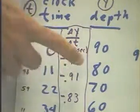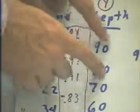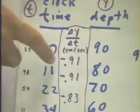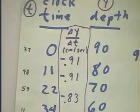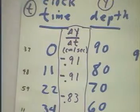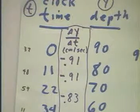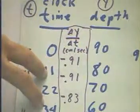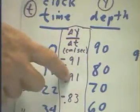So these two lines of the data table give us this calculation of the average rate at which the water depth changes over that time. The next two lines of the table, the 11, 80, and 22, 70 data points, give us the same thing.